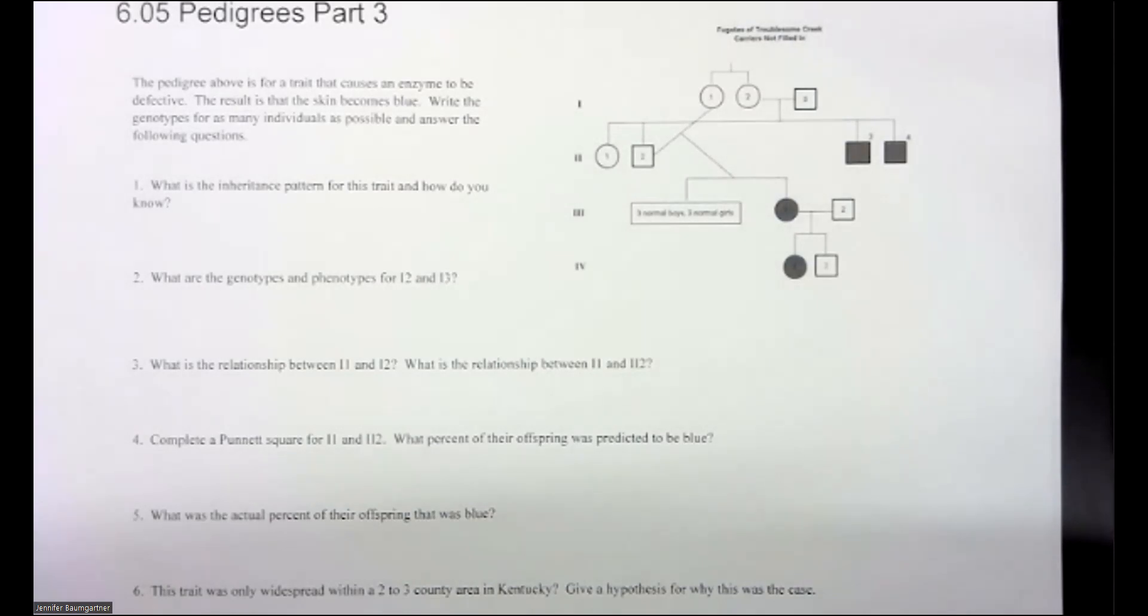So to your right, I have a pedigree, and this is of a family called the Fugates from Troublesome Creek in Kentucky. And they had a disorder called, well, it was an enzyme disorder.